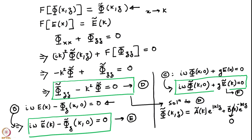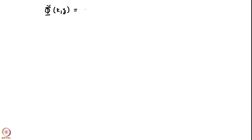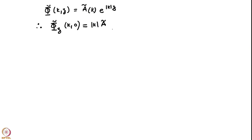So Φ̃(k,z) is just Ã(k)·e^(|k|z). Therefore, we will need the derivative: Φ̃_z evaluated at z=0, which is |k|·Ã(k). We also need Φ̃(k,0), which is just Ã(k). These expressions appear in the boundary conditions equations E and F.